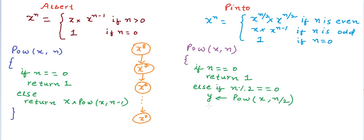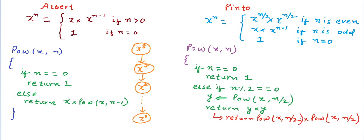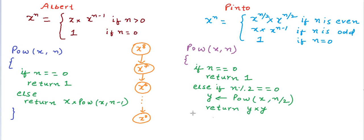Pinto makes a recursive call to calculate x to the power n/2, stores it in y, and returns y times y. Instead of writing two separate calls like power(x, n/2) times power(x, n/2), storing the result avoids unnecessary redundancy — otherwise we'd make two calls to calculate the same value. So we make just one call, store it, and multiply it to get the square. Finally, if n is odd, we return x times power(x, n minus 1), and this works for all n greater than or equal to 0.